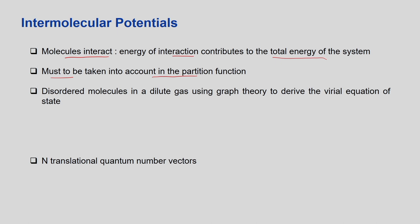For relatively dilute gases, we assume the molecules are disordered. For the prediction of the interatomic potential, we will use a mathematical technique called graph theory to derive the Virial equation of state.